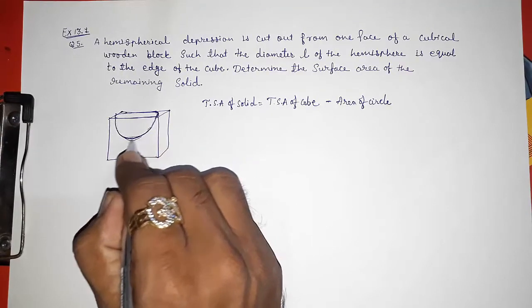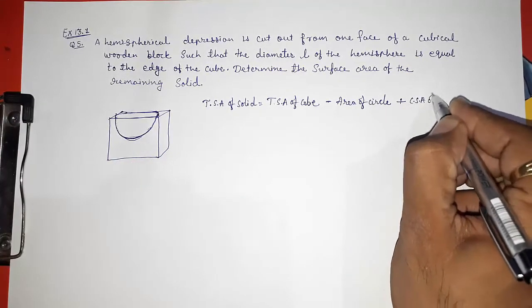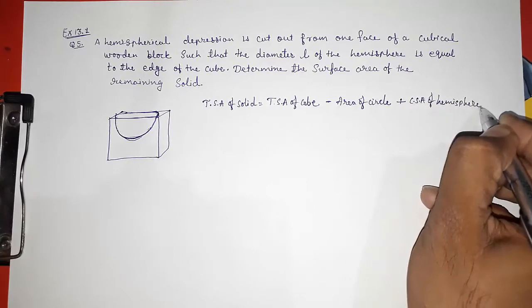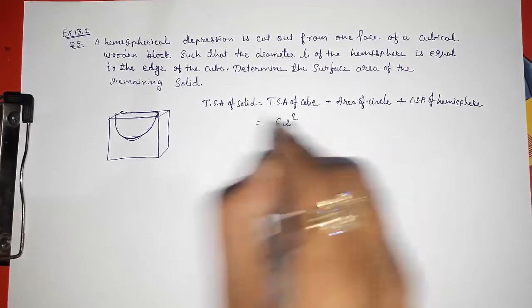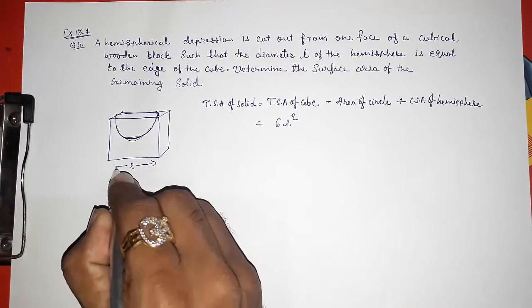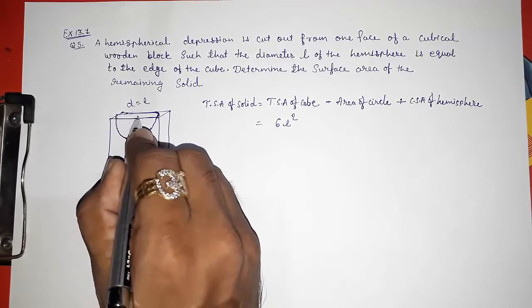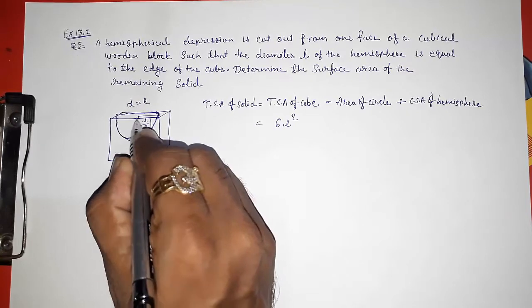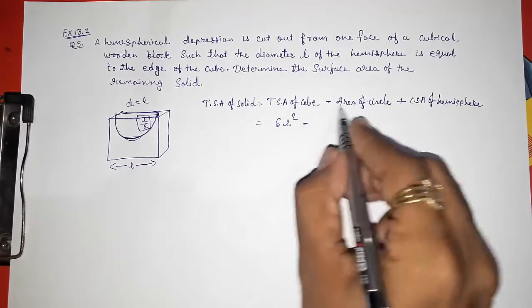Now TSA of cube is 6L². We know the length is given to us, this distance is L, so the diameter will be also L. Now what will be the radius? Radius will be L by 2. Radius will be L by 2, that we will take later.